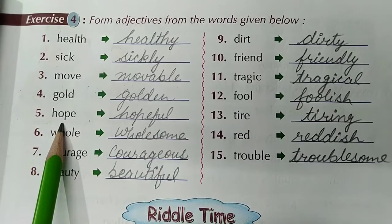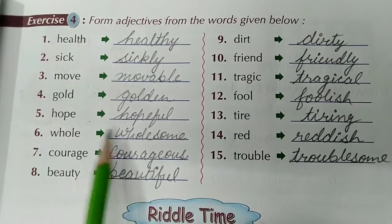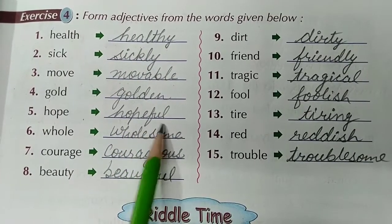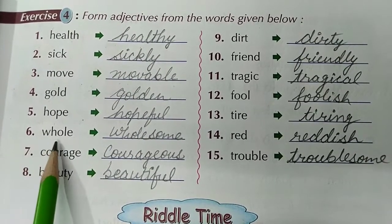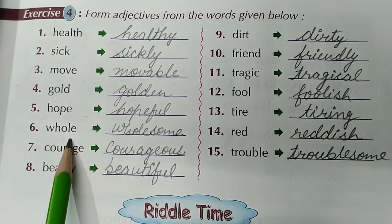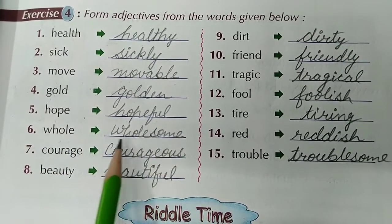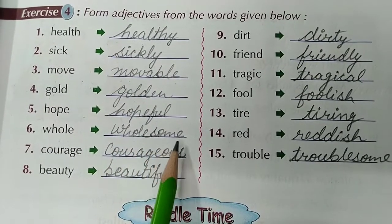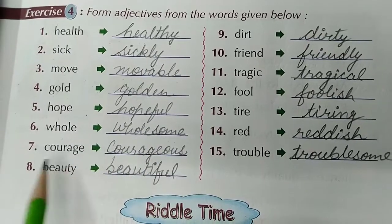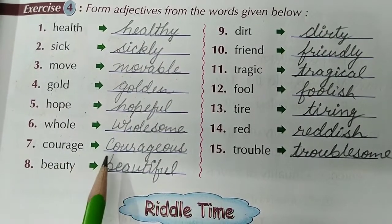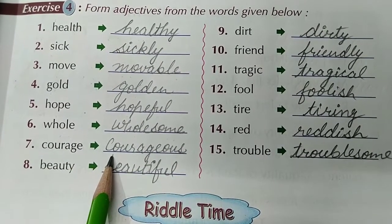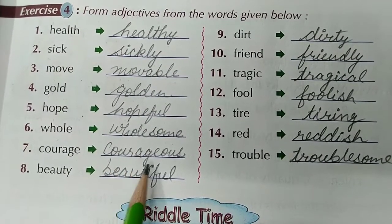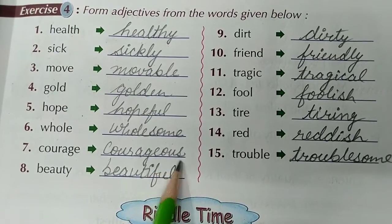Fifth is Hope. The adjective form of Hope is Hopeful — H-O-P-E-F-U-L. Hopeful. Sixth word is Whole. The adjective form of Whole is Wholesome — W-H-O-L-E-S-O-M-E. Wholesome. Seventh is Courage. The adjective form is Courageous — C-O-U-R-A-G-E-O-U-S. Courageous.